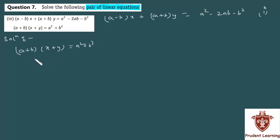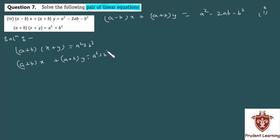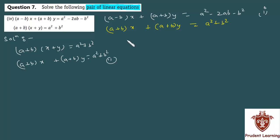Now, what are we doing here? We apply the distributive law to the second equation. So this will become: (a plus b) into x plus (a plus b) into y is equal to a squared plus b squared.